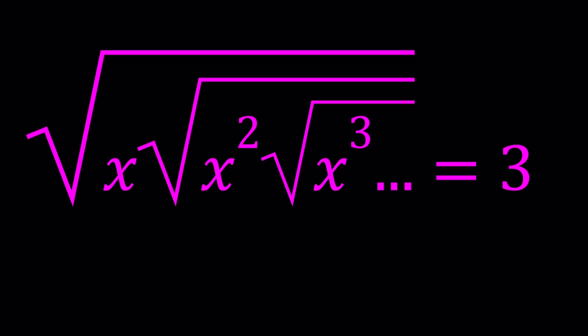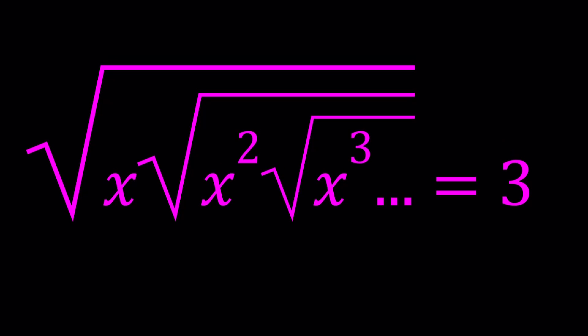We have an expression that converges. When we have an infinite radical, infinite fraction, any type of infinite expression, we should be able to express it as a sequence, and that sequence needs to converge so that we have a finite value. In this case, we are already given 3 and we're going to be solving for x values — I said values because who knows, maybe there's more than one. Let's find out.